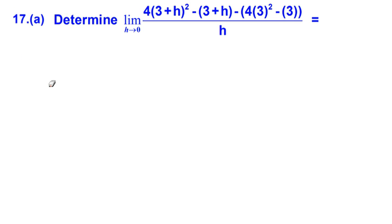Last Friday in our calculus class we had a test on limits and continuity and definition of derivative. Our students had a problem with this one, problem 17a. What we have is determine the limit as h approaches 0 of 4 times (3+h)² minus (3+h) minus the quantity 4 times 3² minus 3, all over h.